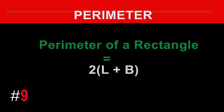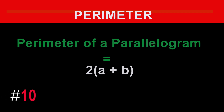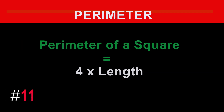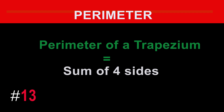The formula for the perimeter of a rectangle is: perimeter equals 2 times (length plus breadth). The formula for the perimeter of a square is: perimeter equals 4 times length. The formula for the perimeter of a triangle is: perimeter equals the sum of three sides. The formula for the perimeter of a trapezium is: perimeter equals the sum of four sides.